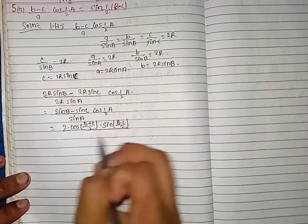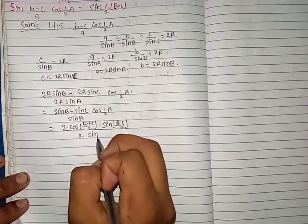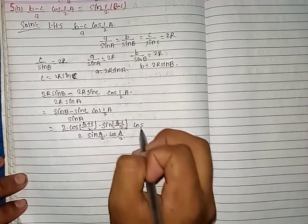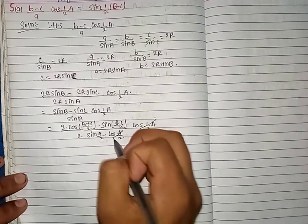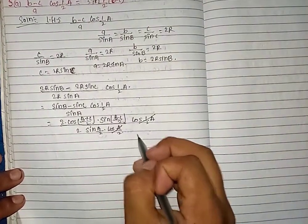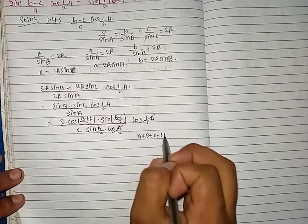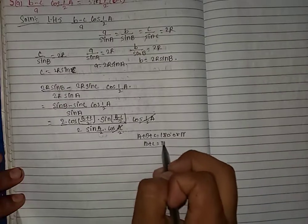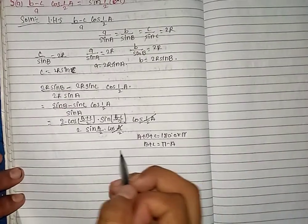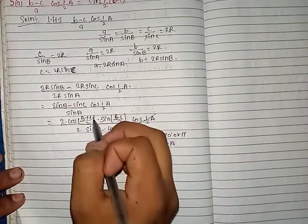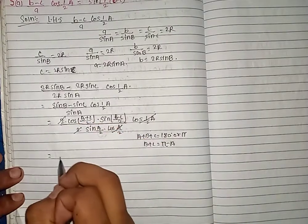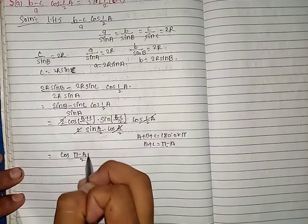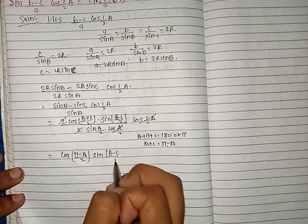Divided by: using the half-angle formula, sin A = 2·sin(A/2)·cos(A/2). Now, we also use A+B+C = 180°, so π + C = 180°, that is π − A. The value of cos(π−A)/2 leads to sin(B−C)/2.